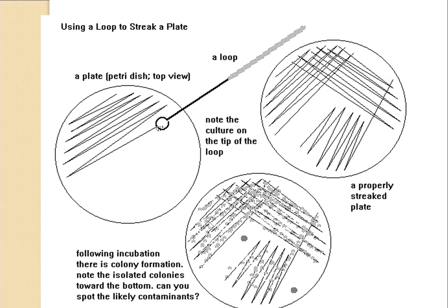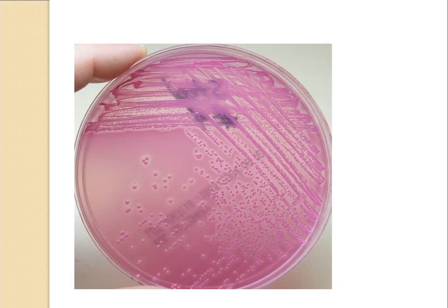The result obtained from the quadrant method: in the first quadrant the colonies are very crowded and cannot be isolated. In the second quadrant the number of colonies decreases, and in the third quadrant there are fewer colonies. In the last quadrant, only one or two colonies can be easily isolated. This is demonstrated on MacConkey's agar with a gram-negative bacterium.